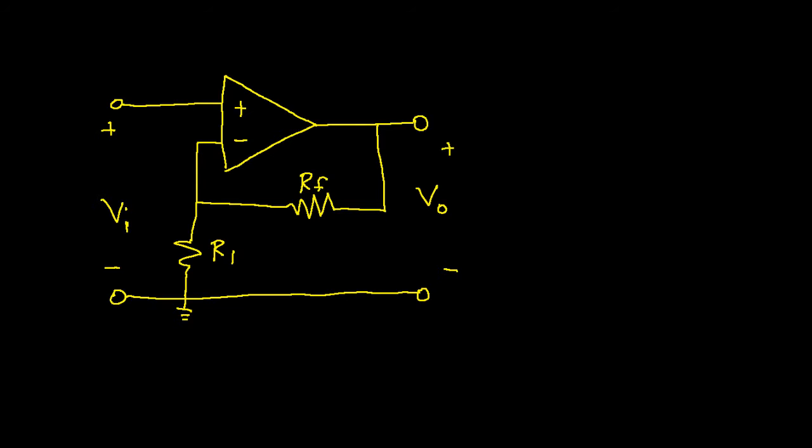On the screen, I've drawn the non-inverting op-amp circuit that we'll analyze. The triangular symbol is the op-amp. The resistors, R-sub-1 and R-sub-F, provide feedback from the output of the op-amp to the input of the op-amp, and their values will determine the voltage gain of the circuit.